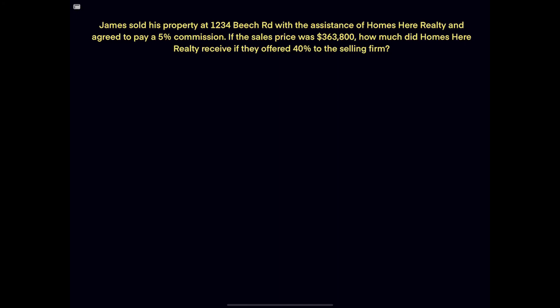We're going to work on a basic commission problem today. James sold his property at 1234 Beach Road with the assistance of Homes Here Realty and agreed to pay a 5% commission. If the sales price was $363,800, how much did Homes Here Realty receive if they offered 40% to the selling firm?